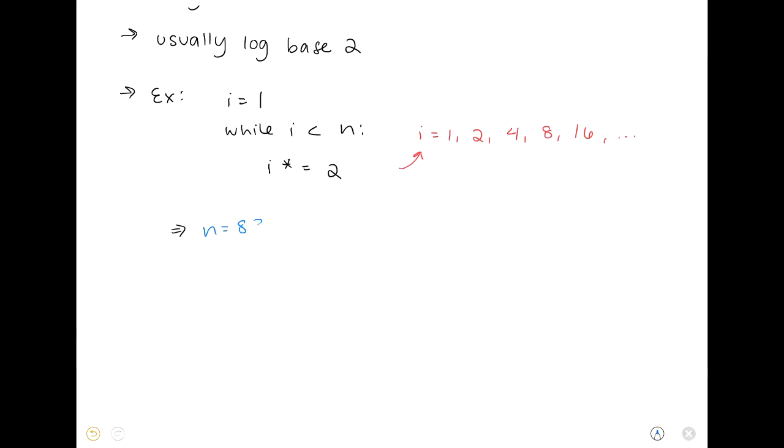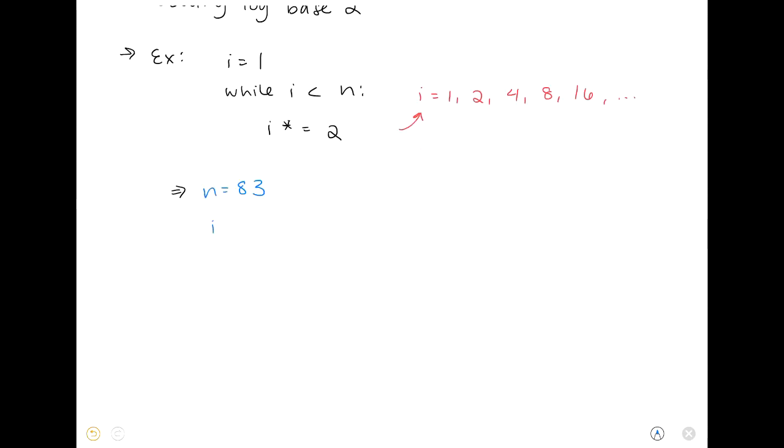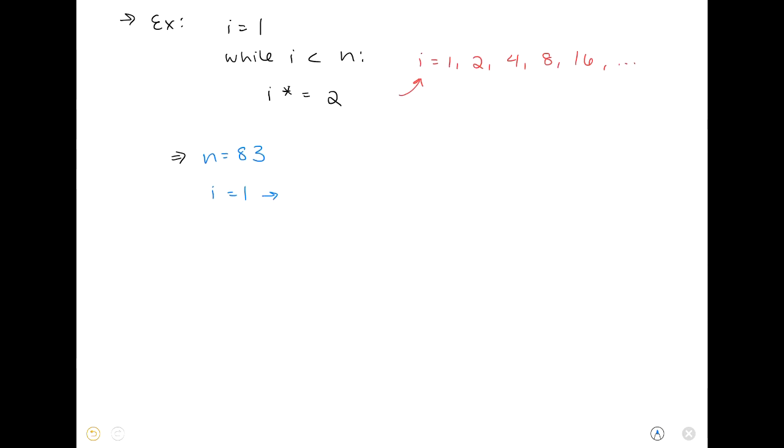Let's say that n is 83 in this case. Then we know that our while loop will run until our index i is greater than or equal to 83. So i will start off as 1. Then as we loop through, the current value of i will be multiplied by 2. So i goes from 1, then multiplied by 2 gives 2, multiplying by 2 again gives 4, then 8, then 16, then 32, 64, and then 128.